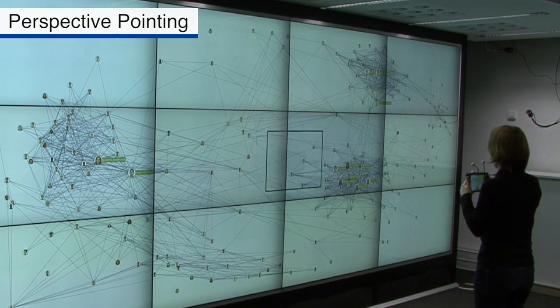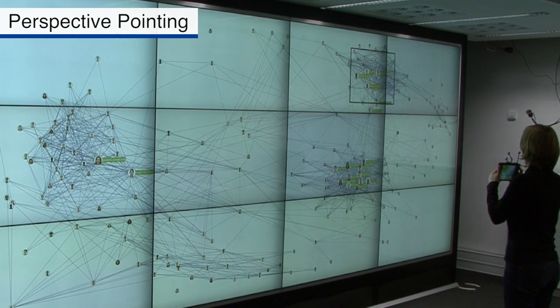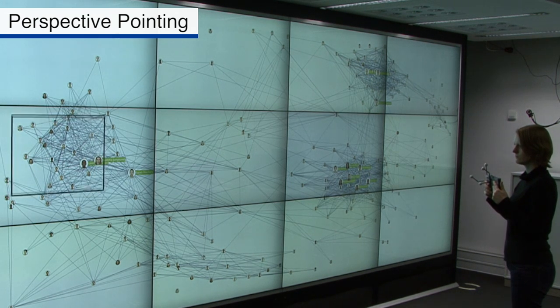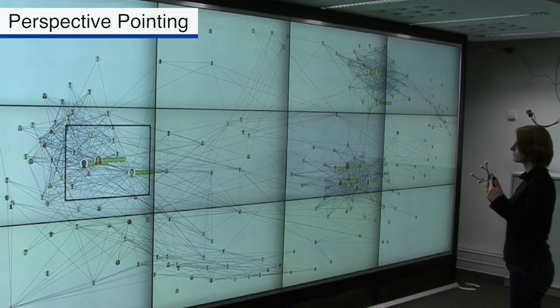In perspective mode, the orientation of the device is used to point at the display. This allows a farther reach of elements on the wall using only a tilt of the mobile device.